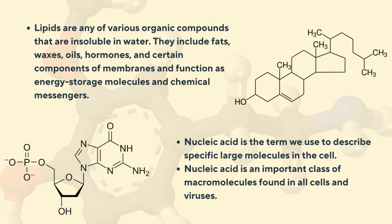Then we've got nucleic acids. The nucleic acids store organisms' heritable information and its conversion into protein. We've got two major nucleic acids: deoxyribonucleic acid, known as DNA, and ribonucleic acid, known as RNA. The elements contained in this compound are carbon, hydrogen, oxygen, nitrogen, as well as phosphorous.